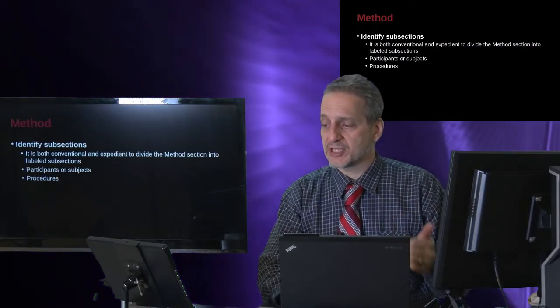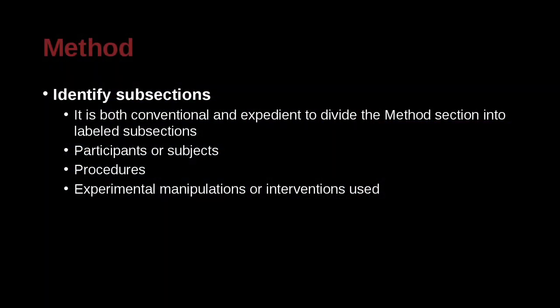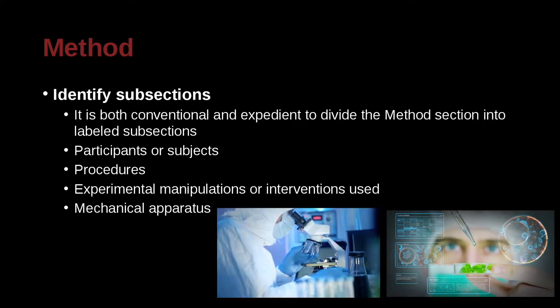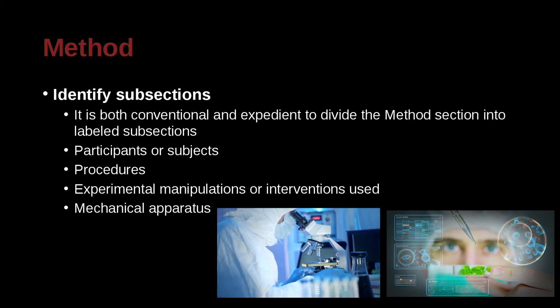They may include subjects, procedures, or the types of manipulations you had—that is, what did you do to the subjects? They may include the machines you use. So you may use an electron microscope in one part and some kind of fluorescent chemical in another part to see things.